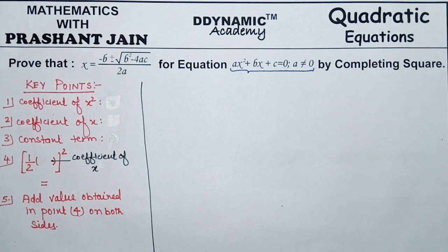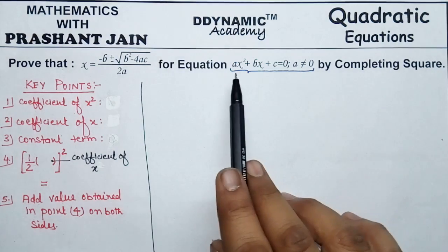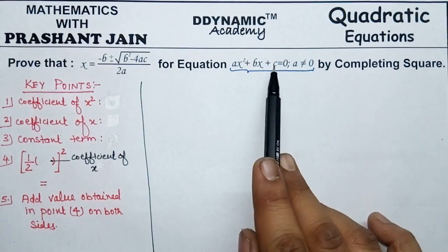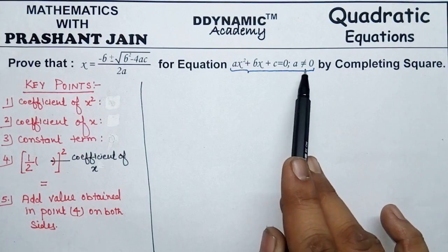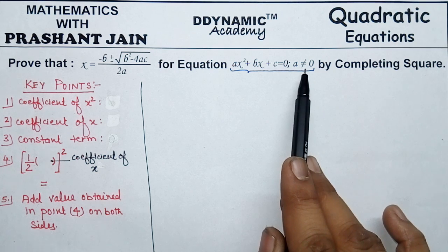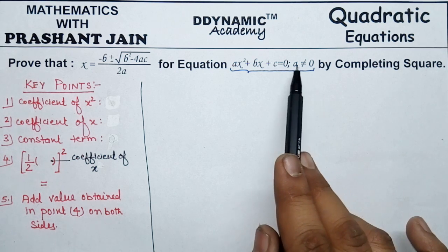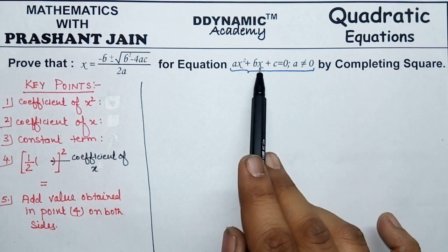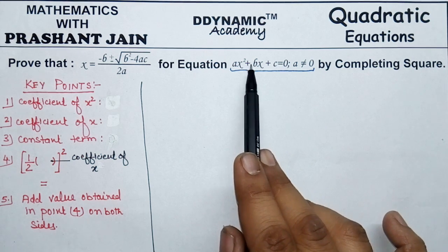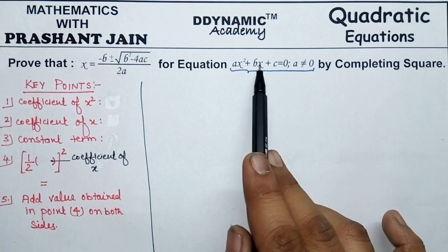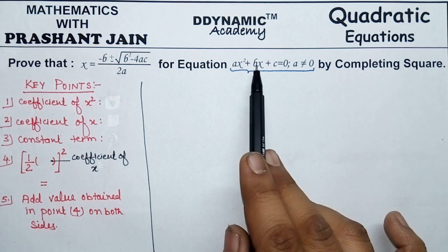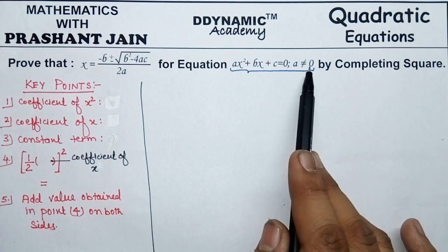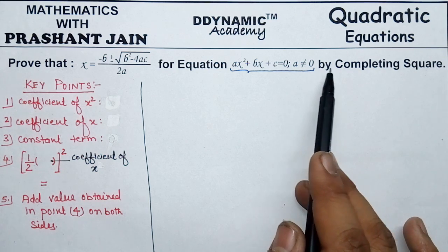In this video we will see how to obtain a quadratic formula with the help of the method completing the square. We will discuss the general equation ax² + bx + c = 0, where a ≠ 0. The condition a ≠ 0 is mandatory for the quadratic equation. If a becomes zero, the x² term vanishes and the remaining equation bx + c = 0 becomes a linear equation. So a ≠ 0 is the mandatory condition for the quadratic equation.